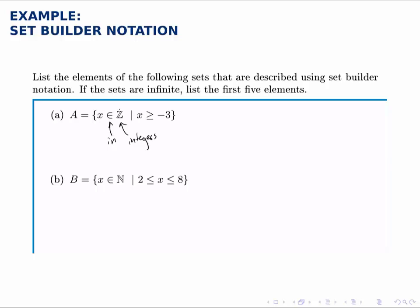So it's the set of all the integers such that - that's that vertical line - X is greater than or equal to negative 3.